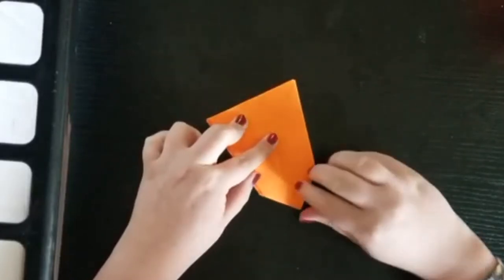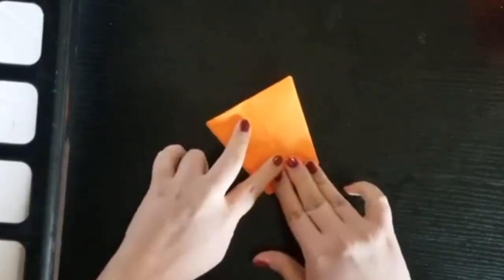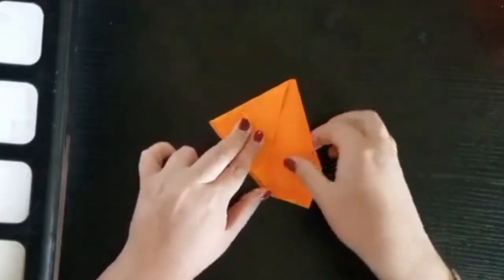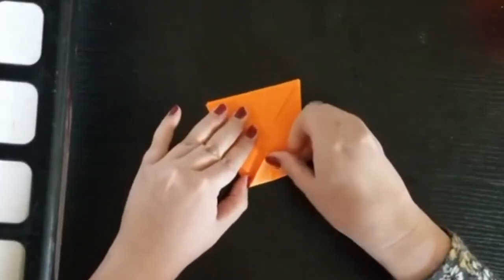Now we are going to fold from corner to corner on the closed side. Fold it up, make sure it's straight, and make a nice crease. Then unfold, flip over the paper, and do the same thing. This is just to create a line for later.